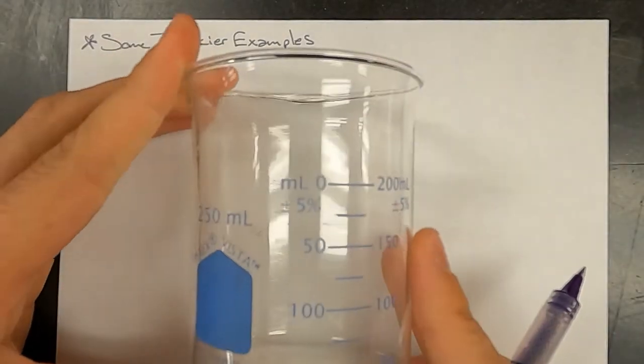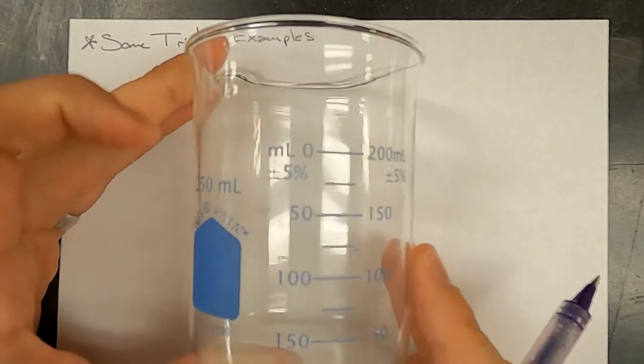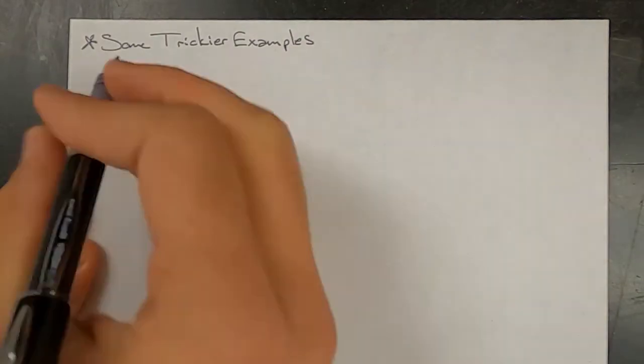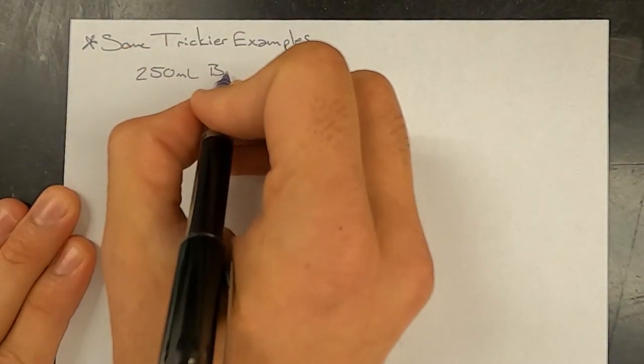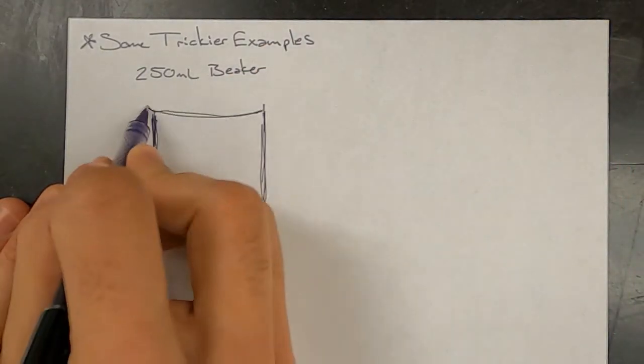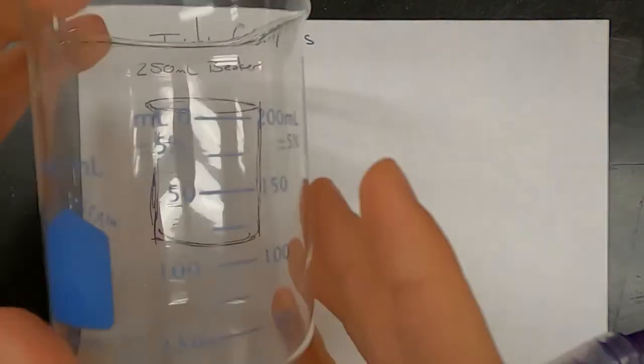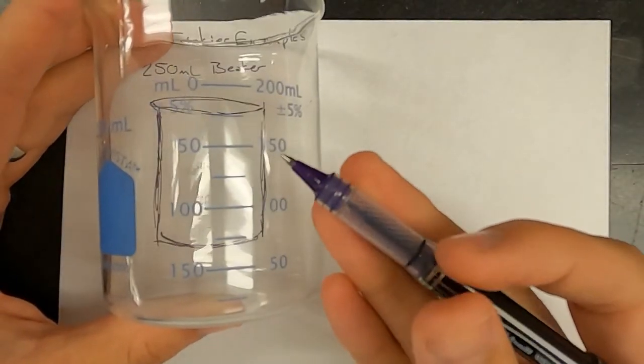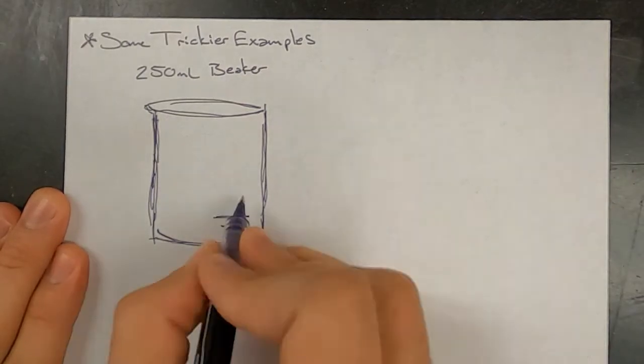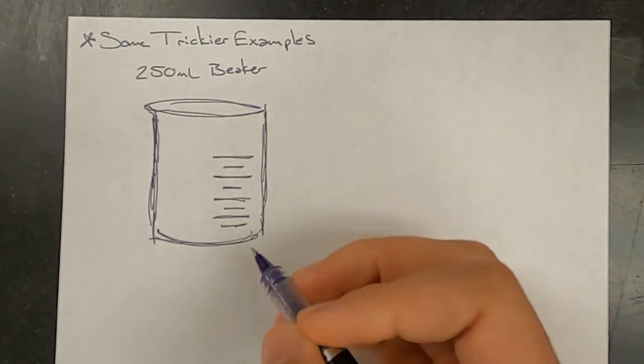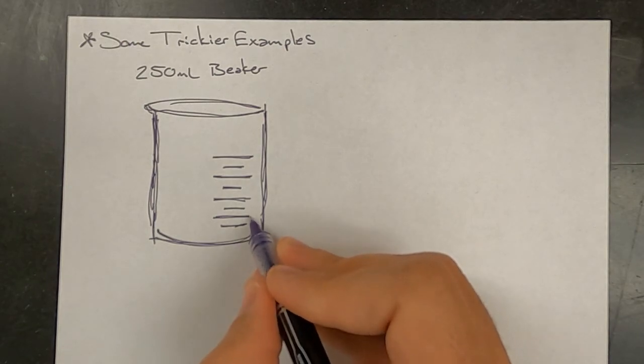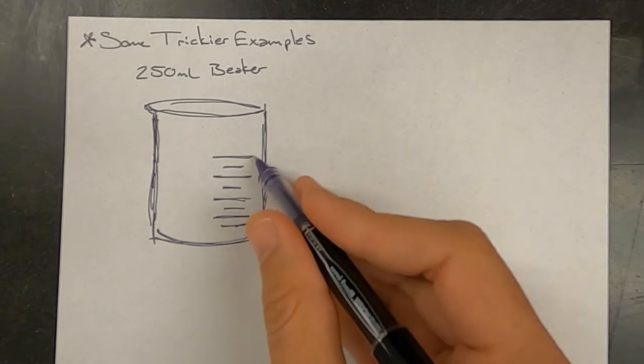We're going to look at this 250 milliliter beaker here. We're going to sketch it and draw a water level in it. And on the beaker there are one, two, three, four, five, six, seven, eight marks. With each of the longer marks being on this side of the line going 50, 100, 150, and 200.